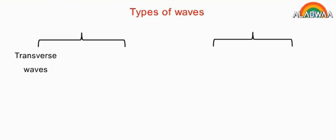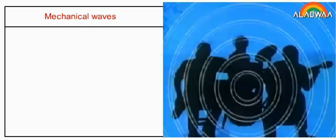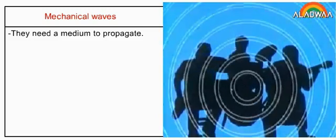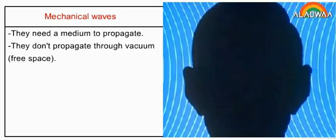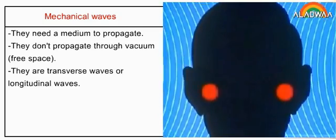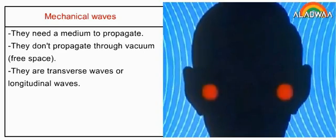Types of waves: transverse waves, longitudinal waves, mechanical waves, and electromagnetic waves. Mechanical waves need a medium to propagate; they don't propagate through vacuum or free space. They are transverse waves or longitudinal waves.